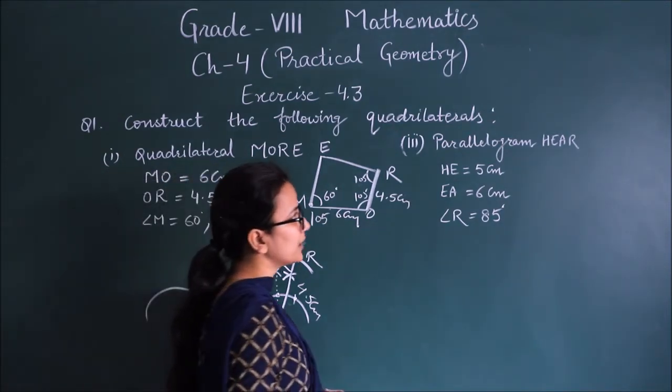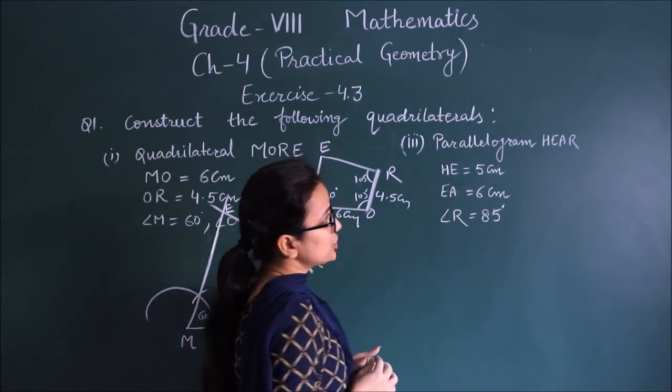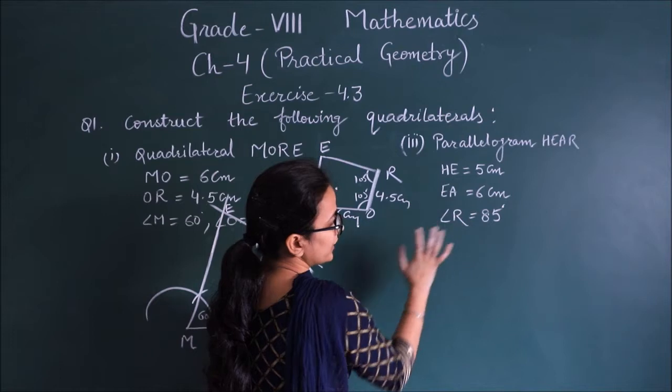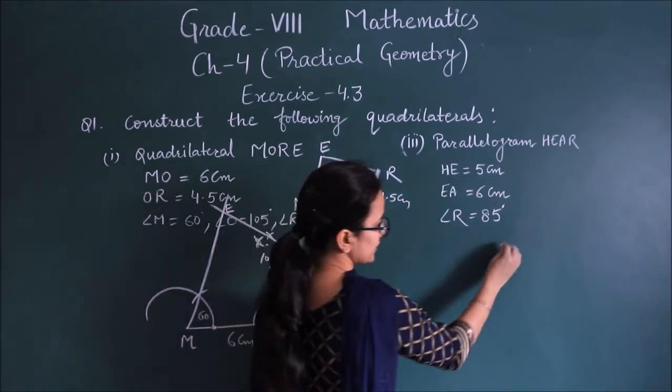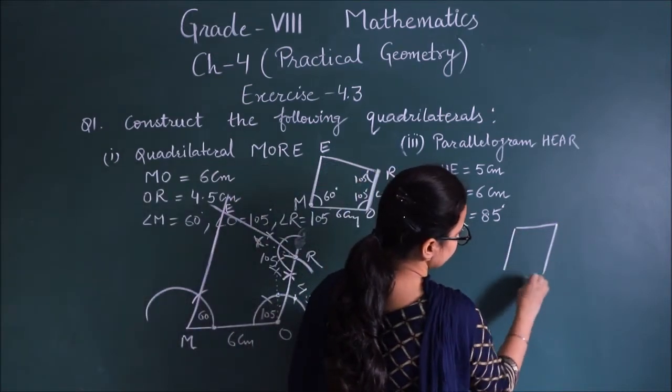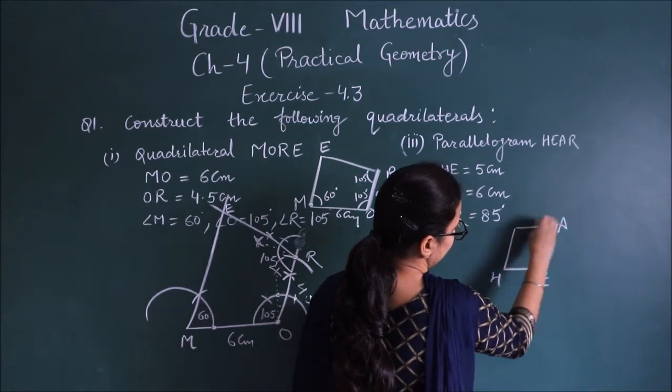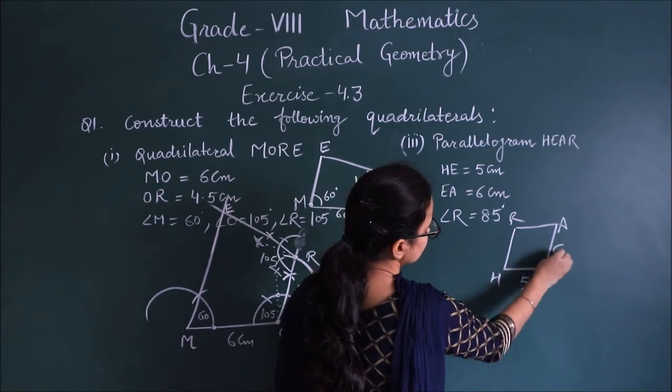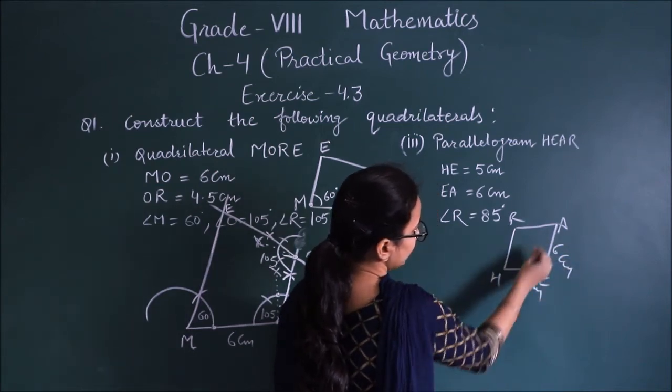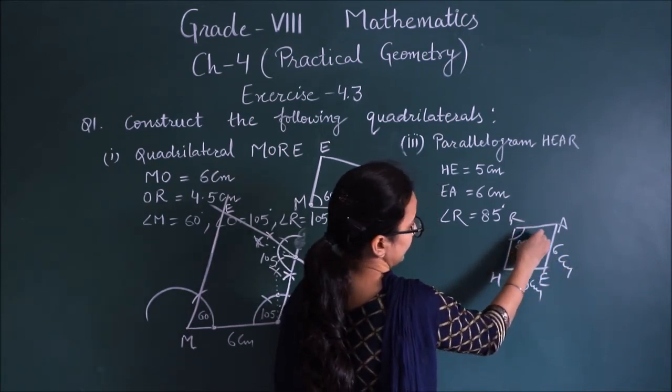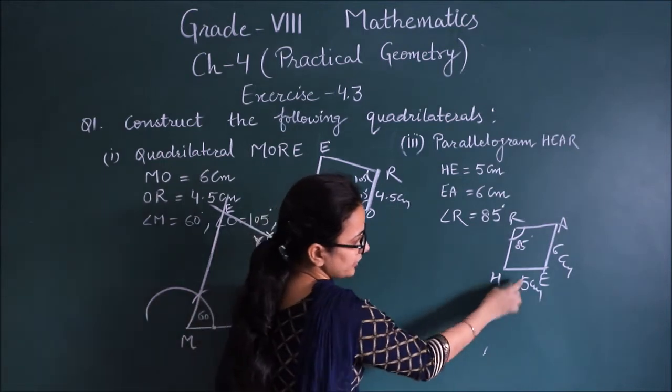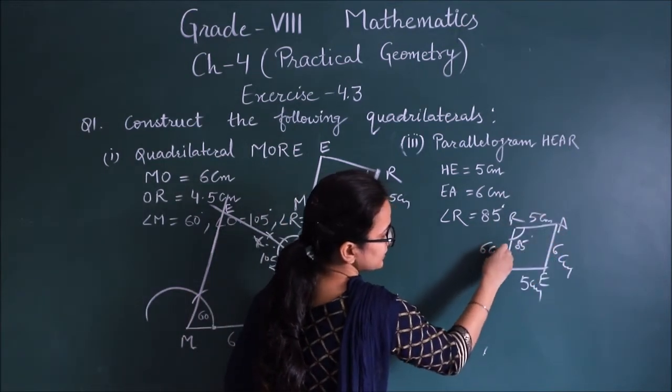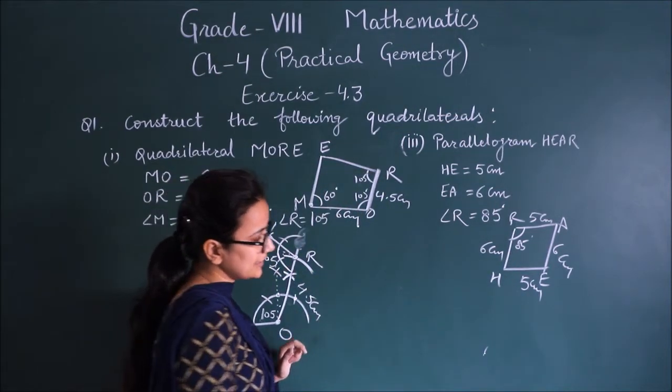Third part. Parallelogram H-E-A-R. So I will make a rough sketch. H, E, A, R. HE, 5 cm. EA, 6. Angle R given is 85. And if this is 5, then this is 5. And then when this is 6, then this is 6. So we can do it.